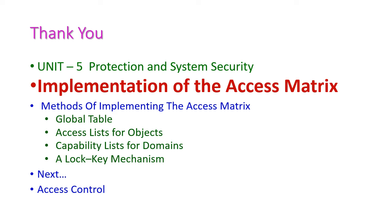So far we have seen the implementation of access matrix. There are four different methods: global table, access list for objects, capability list for domain, and lock and key mechanism. In the next class we will see access control. Thank you.